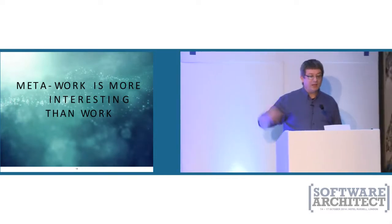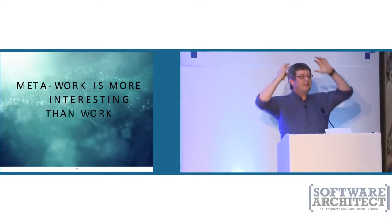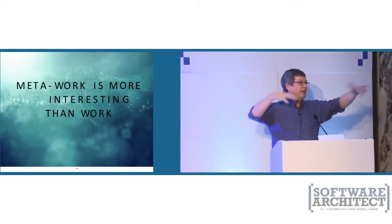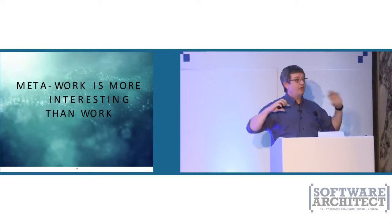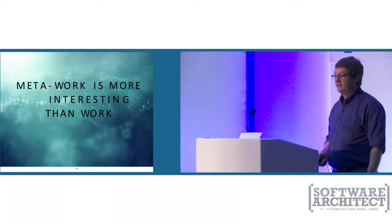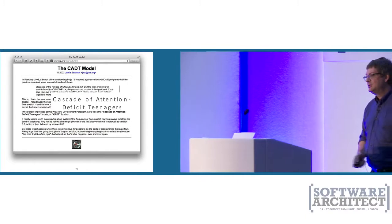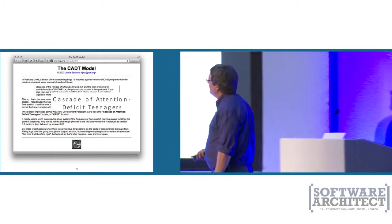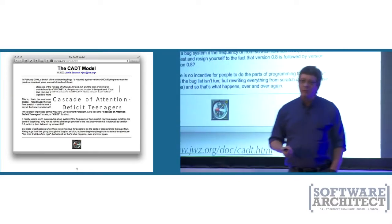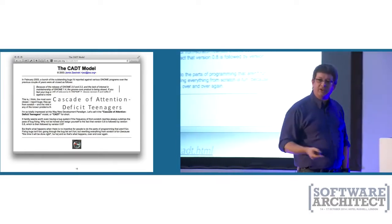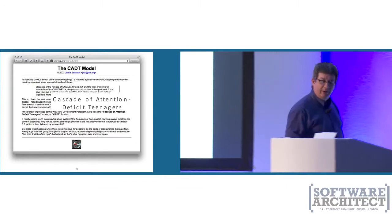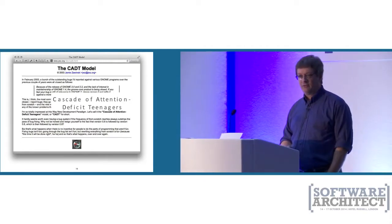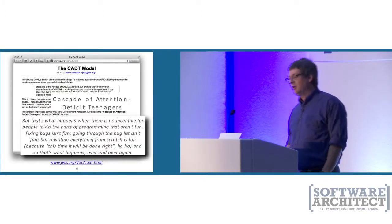Everybody knows that working on a framework is way cooler than building the actual application that needs the framework — because meta work is more interesting than work. We see crazy mixed-up branching strategies where nobody actually understands what constitutes a release. They've invented an awesome puzzle to solve every single day. This was identified back in 2003 when Jamie Zawinski wrote a famous blog post about GNOME, complaining that bugs never got fixed — he called it the 'cascade of attention deficit teenagers model of software development.'